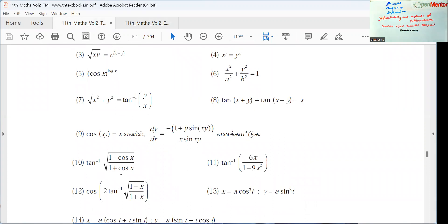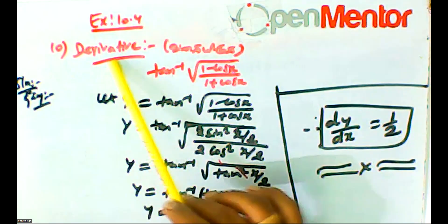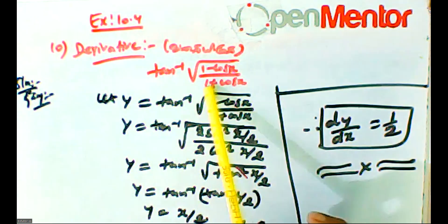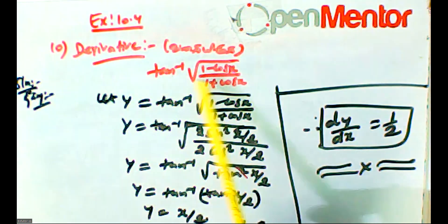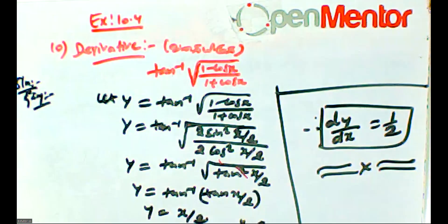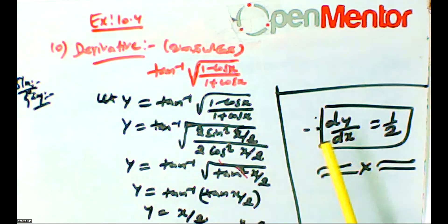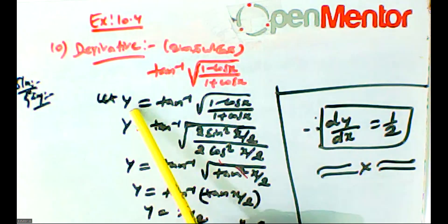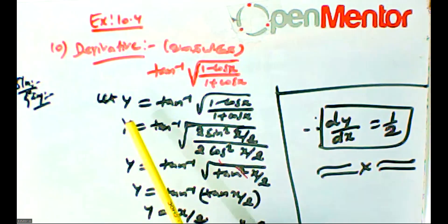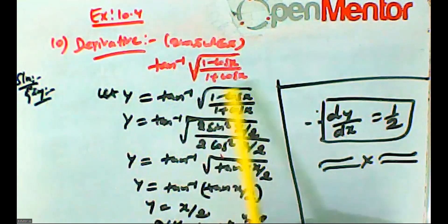Find the derivative of y equals tan inverse of the square root of (1 minus cos x) divided by (1 plus cos x). Let y equal tan inverse of the square root of (1 minus cos x) divided by (1 plus cos x). This is 1 minus cos x.